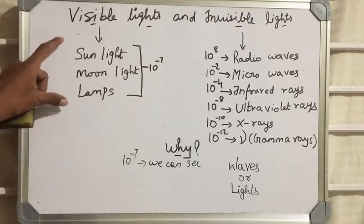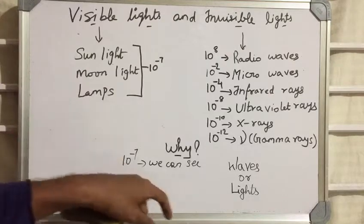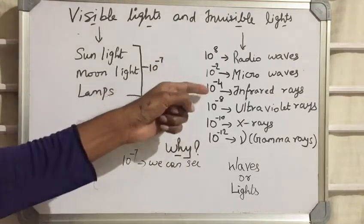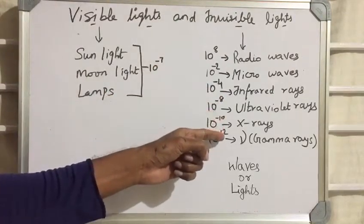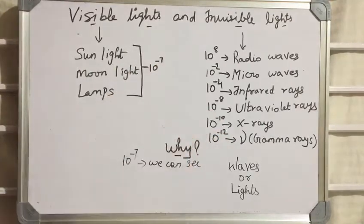Actually, here we have sunlight, moonlight, lamps, and here we have radio waves, microwaves, infrared, ultraviolet rays, x-rays, and gamma rays with their ranges.